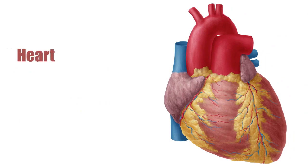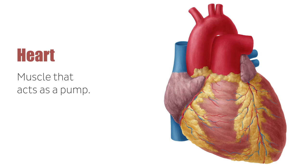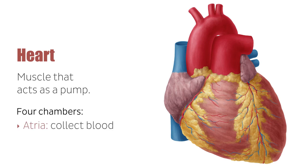The heart is a muscle that acts as a pump. Through electrostimulation, it beats and pushes the blood around the entire body through the circulatory system. The heart is comprised of four chambers that consist of two pairs on the left and right sides of the heart. The atria collect blood returning to the heart, while the ventricles pump blood out of the heart.